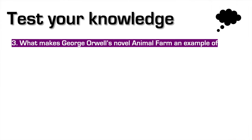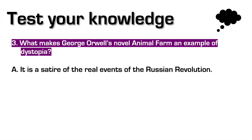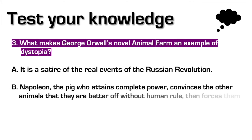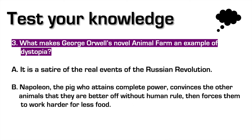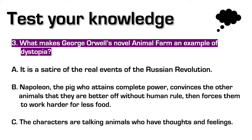Question 3: What makes George Orwell's novel Animal Farm an example of dystopia? A: It is a satire of the real events of the Russian Revolution. B: Napoleon the pig, who attains complete power, convinces the other animals that they are better off without human rule, then forces them to work harder for less food. C: The characters are talking animals who have thoughts and feelings. The right answer is B.